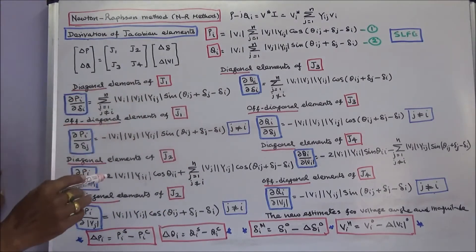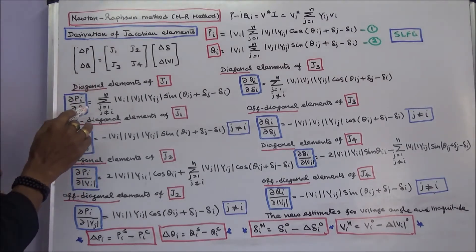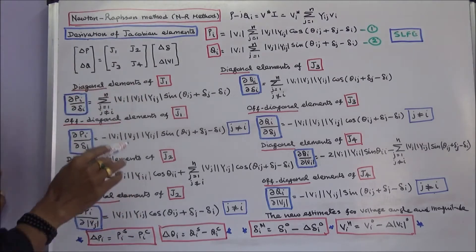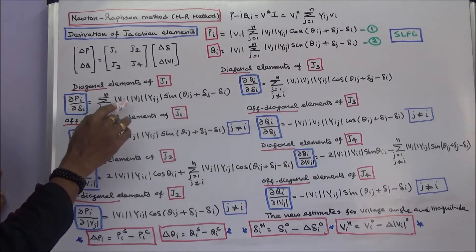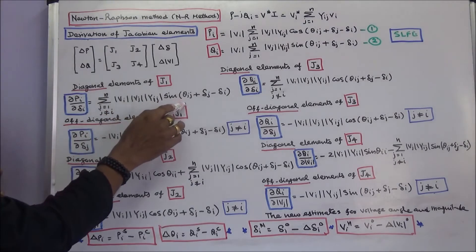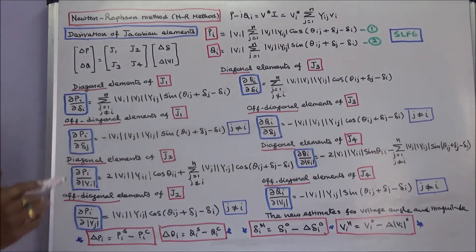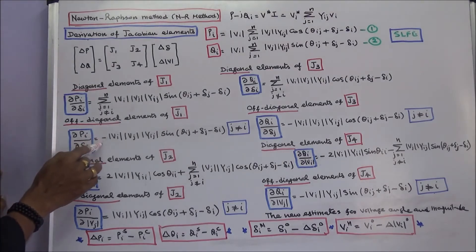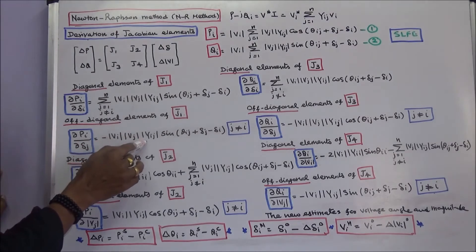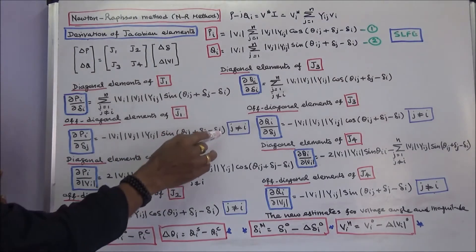Diagonal elements of J1: ∂Pi/∂δi is equal to sigma (j=1 to n, j≠i) |Vi||Vj||Yij| sin(θij + δj − δi). Off-diagonal elements of J1: ∂Pi/∂δj is equal to minus |Vi||Vj||Yij| sin(θij + δj − δi), for j not equal to i.